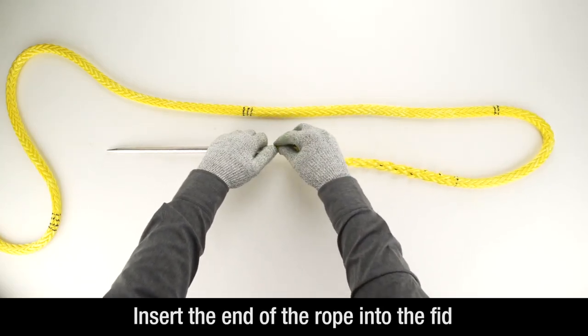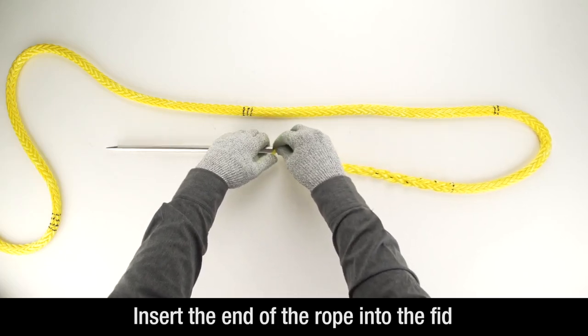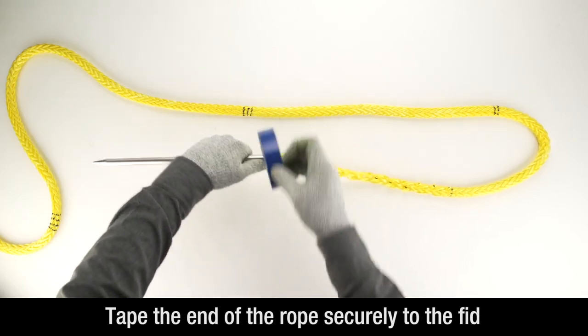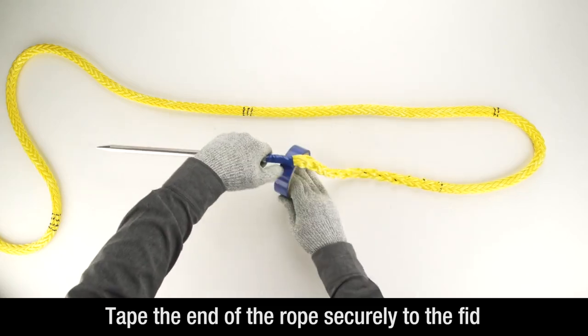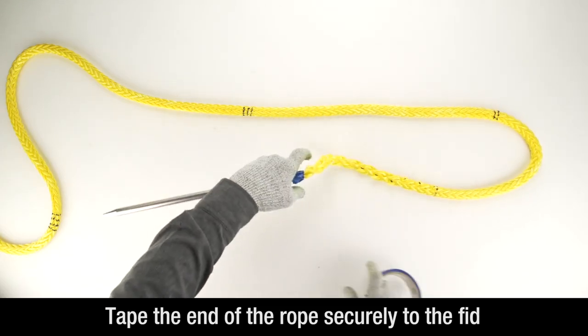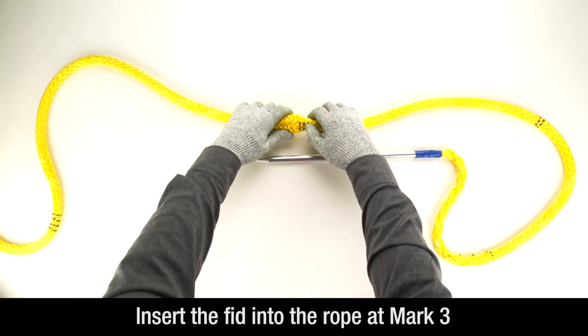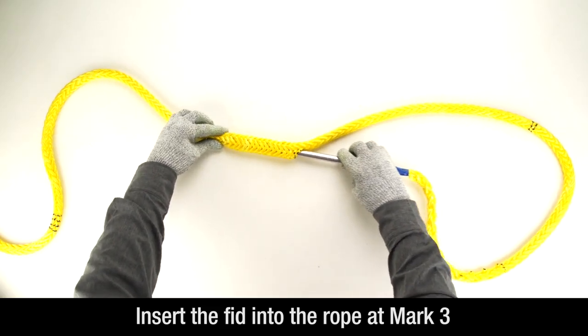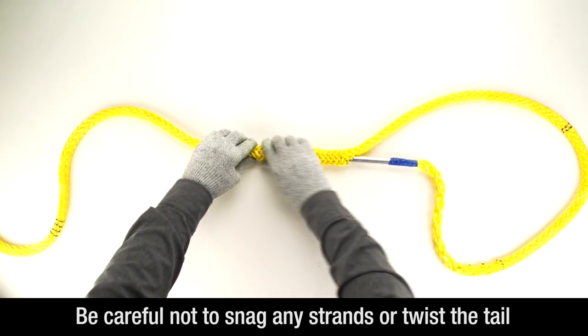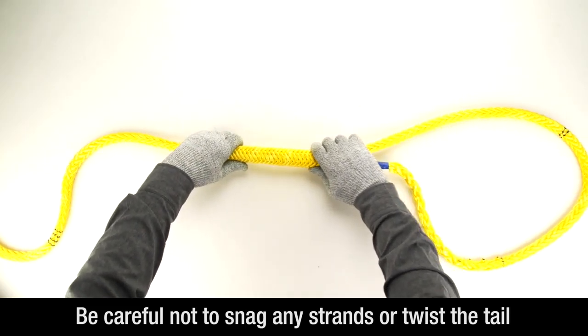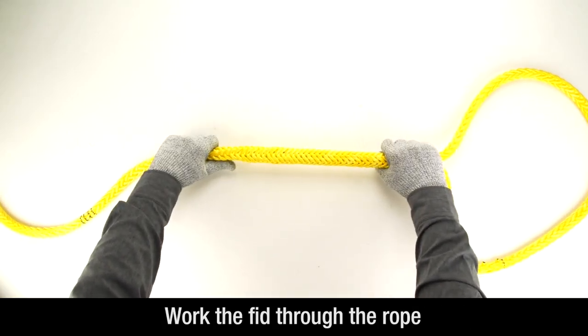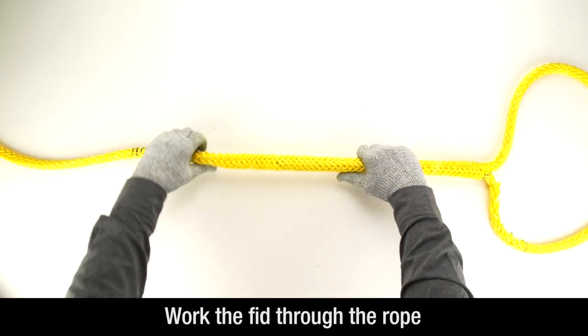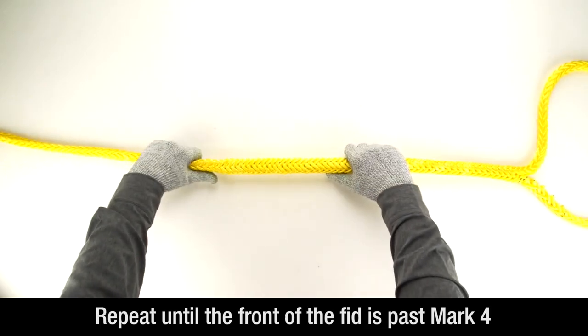Now, insert the end of the rope into the end of the tubular fid. Tape the end of the rope securely to the fid. Insert the fid into the rope at mark 3. Be careful not to snag any strands or twist the tail while performing the bury. Work the fid through the rope by holding the end where the rope tail is attached and pulling the rope over the fid. Then, grasp the front of the fid and smooth the rope over the fid. Repeat until the front of the fid is past mark 4.